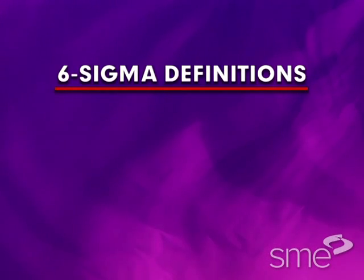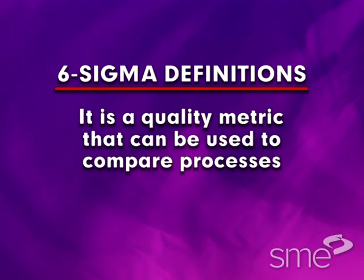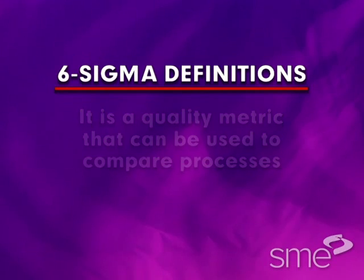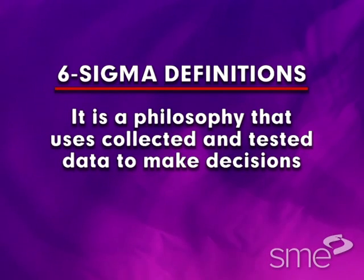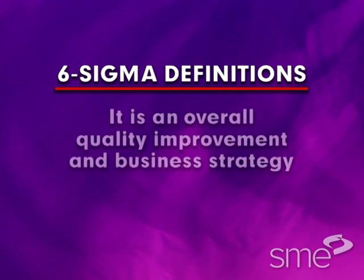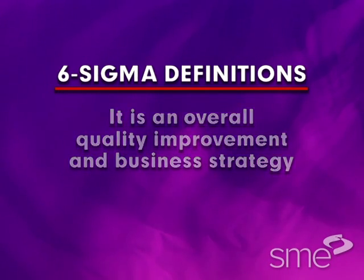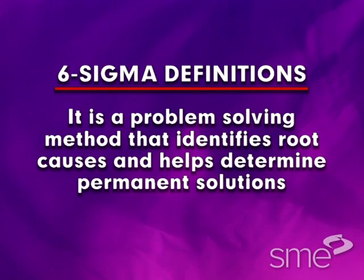The definition of Six Sigma is not simple. More accurately, Six Sigma has several definitions. One, it is a quality metric that can be used to compare processes. Two, it is a quality system that controls variation in products. Three, it is a philosophy that uses collected and tested data to make decisions. Four, it is an overall quality improvement and business strategy. And finally, Six Sigma is a problem-solving method that identifies root causes and helps determine permanent solutions.